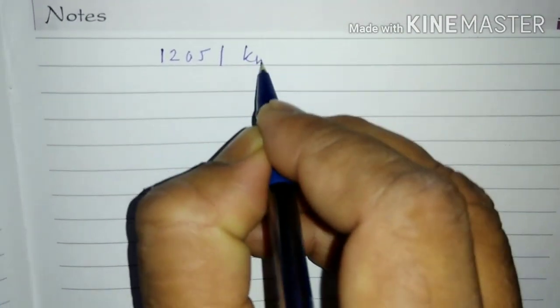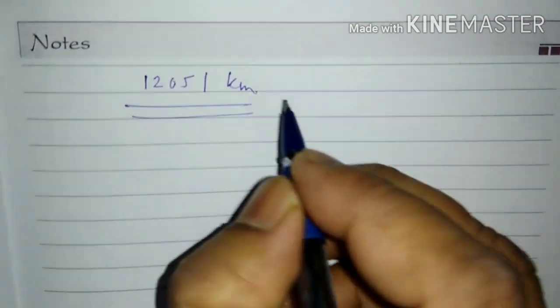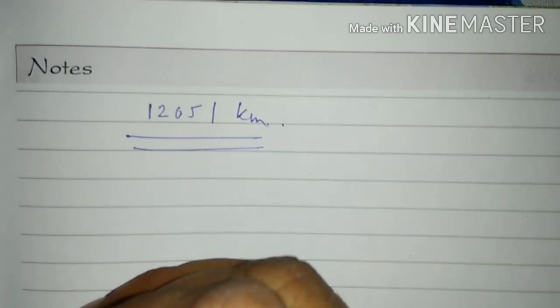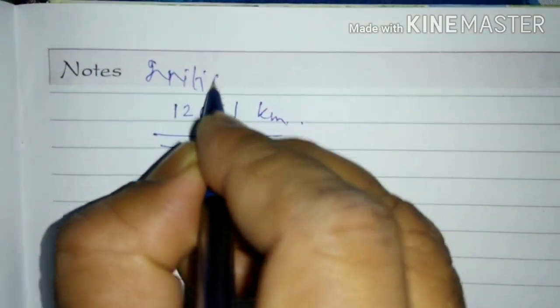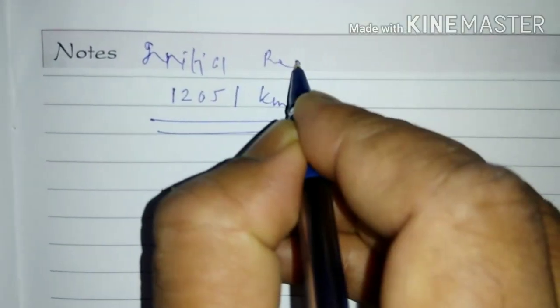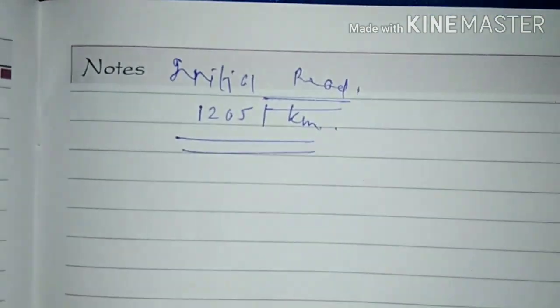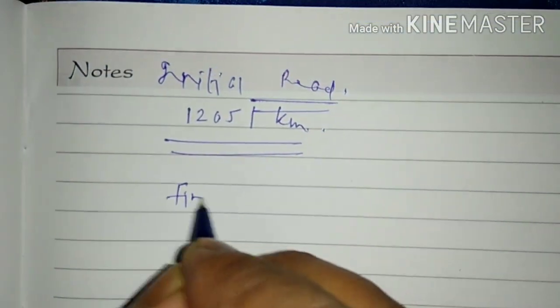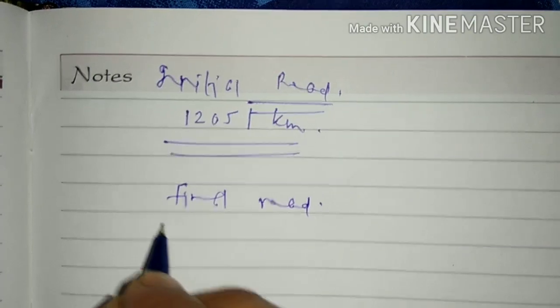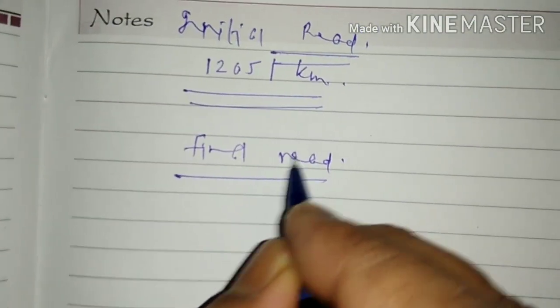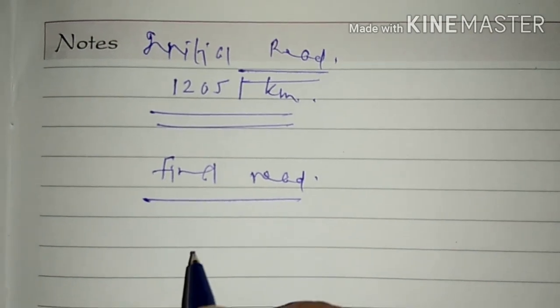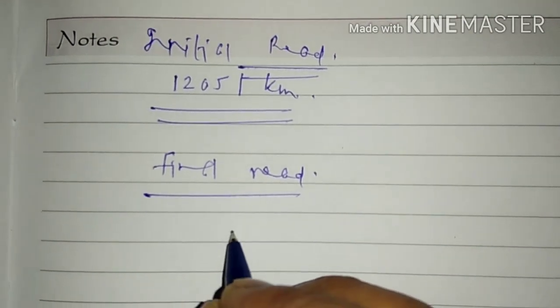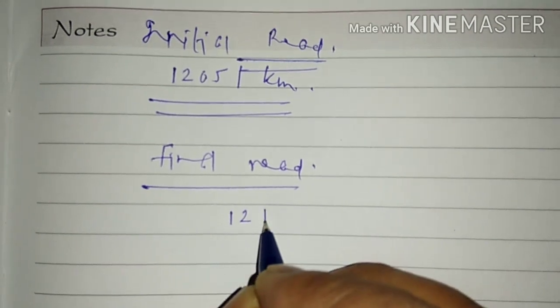And you reach to your destination, so write initial reading. Again, final reading. Suppose after reaching at your final destination, the reading of odometer is 12,186 kilometers.